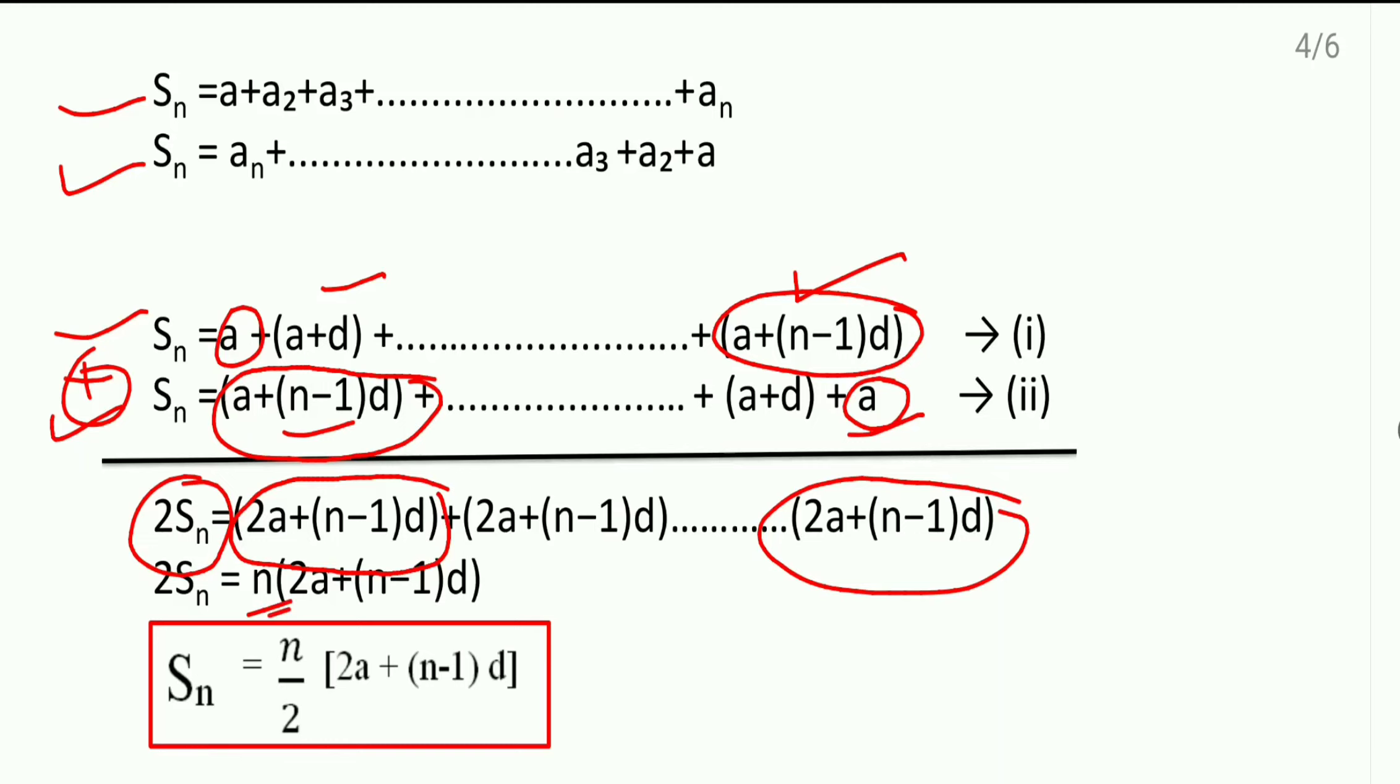Now, this 2 which was multiplying here, it came down to divide. And, we are getting the formula here as sum of n terms is equal to n by 2 in the bracket [2a + (n-1)d].